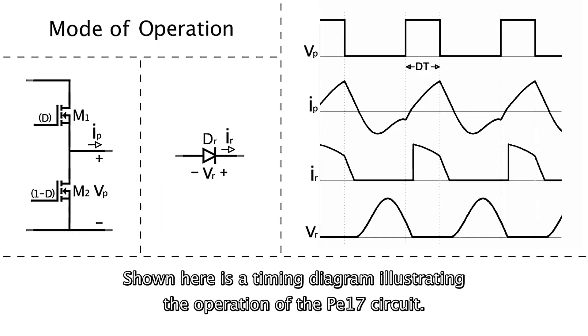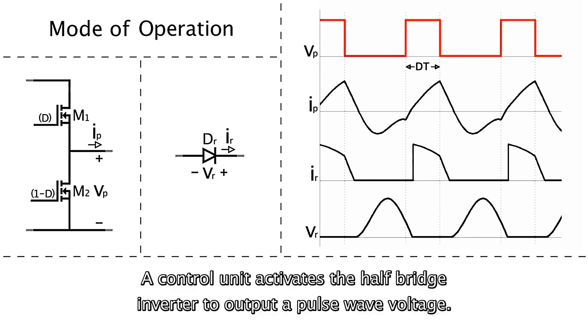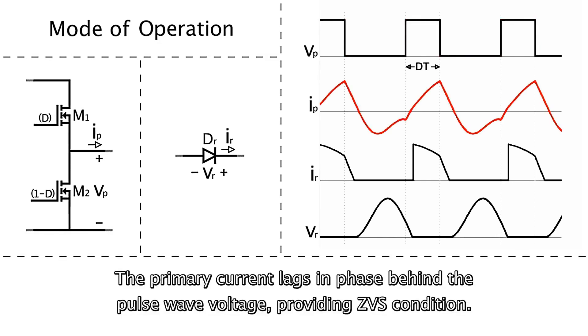Shown here is a timing diagram illustrating the operation of the PE-17 circuit. A control unit activates the half-bridge inverter to output a pulse-wave voltage. The primary current lags in phase behind the pulse-wave voltage, providing zero-voltage switching condition.